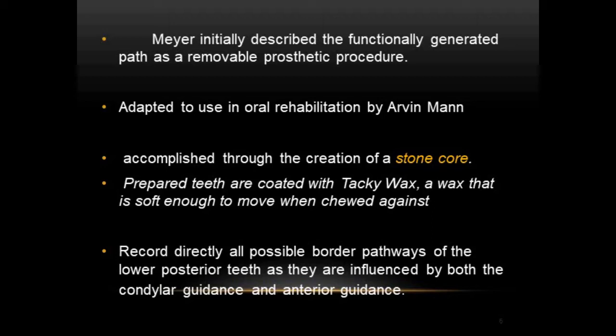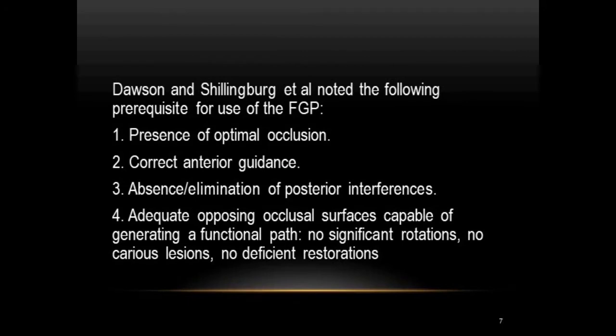Before beginning FGP, Dawson and Schillingbaugh noted the following prerequisites: first, presence of optimal occlusion; second, correct anterior guidance; third, absence of posterior interferences; and fourth, adequate opposing occlusal surfaces capable of generating a functional path — meaning there should be no rotation, carious lesions, or deficient restorations on the opposing surface. These are likely Viva questions.